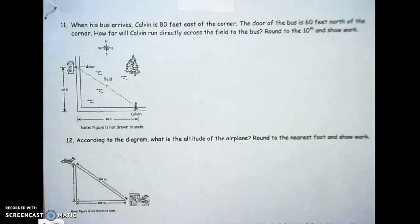Number 11, let's do the math. When his bus arrives, Kelvin is 80 feet east of the corner, and the door of the bus is 60 feet north of the corner. How far will Kelvin run directly across the field to the bus? Round to the nearest tenth and show your work.